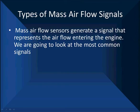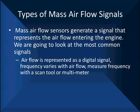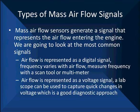Mass air flow sensors generate a signal that represents the air flow entering the engine — it calculates the air entering the engine and produces a signal representing that value. Some air flow sensors represent air flow as a digital signal where frequency varies with air flow; the best way to test those is with a scan tool or multimeter. But when air flow is represented as a voltage, that can be tested with a lab scope to capture quick changes in voltage, and we'll show you some diagnostic approaches using those rapid changes.